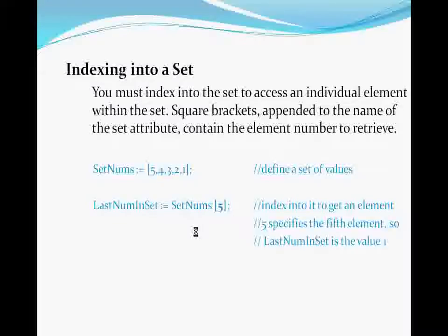You can index into a set of values in ECL to get a single element. For example, the setnums attribute is defined as a set of five integer values: 5, 4, 3, 2, and 1. The last_num_in_set attribute is then defined as setnums[5], which gives you the fifth element — the value one. ECL uses one-based numbering, not zero-based. The index number specifies the ordinal position within the set of the element to use.